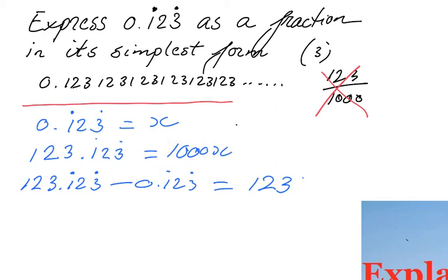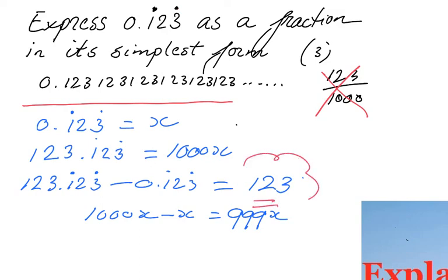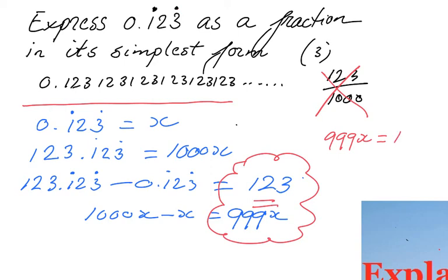So 1000x take away x equals 999x, and that equals 123. That is a crucial step to understand. Therefore x equals 123 over 999.